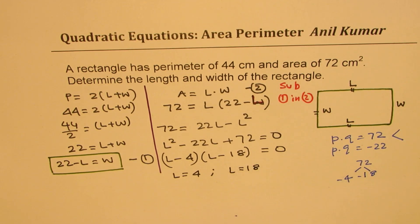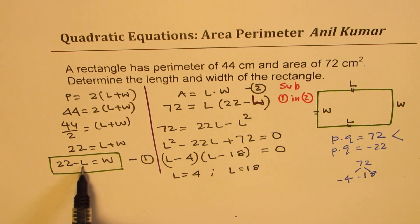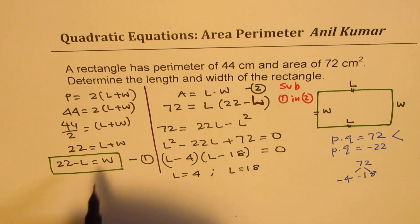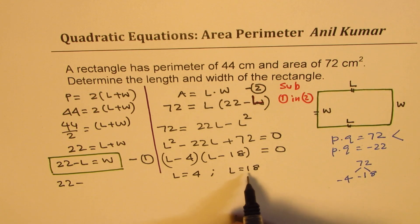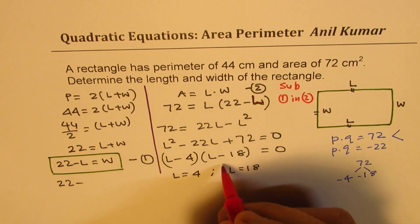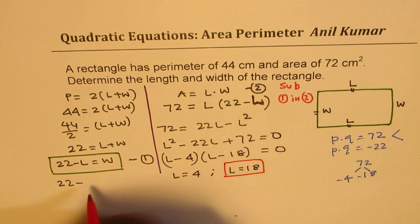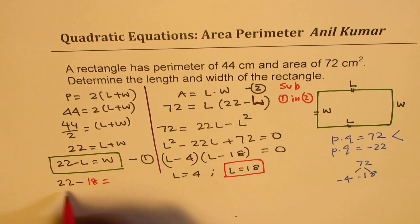So these are your two solutions. Well, if I substitute 4 here, then I get W as 18. So if I substitute 18 for length, the bigger one, let us say we take this one - if I do 18, I get W as 4.